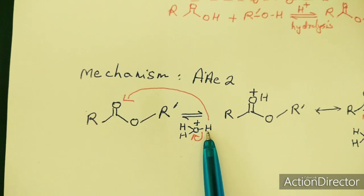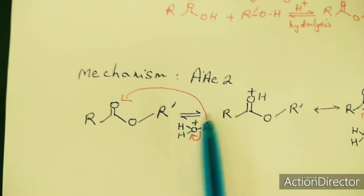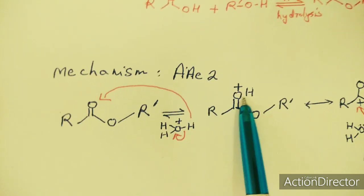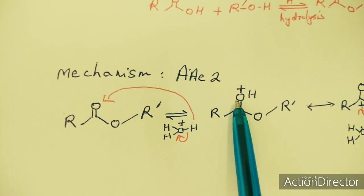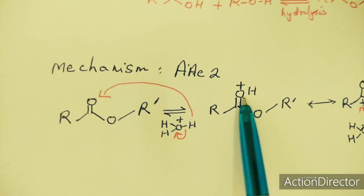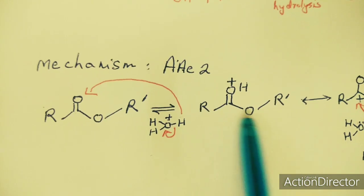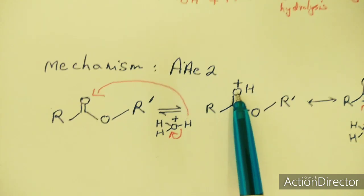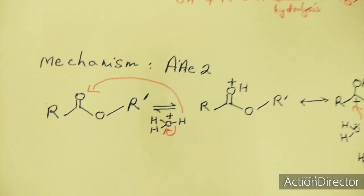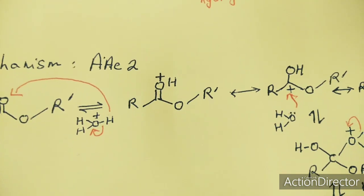H+ from the hydronium ion attacks this oxygen. As a result, the oxygen gets a positive charge. A positive charge on oxygen is not a stable condition. Therefore, the molecule tends to form resonance hybrids as indicated. The oxygen tries to stabilize itself, resulting in resonance-stabilized structures where the positive charge shifts so that the double bond changes to a single bond and carbon gets the positive charge.